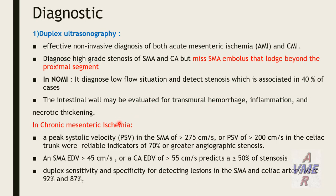For chronic mesenteric ischemia, peak systolic velocity in the superior mesenteric artery greater than 275 cm/s predicts 70% or more angiographic stenosis. A peak systolic velocity greater than 200 cm/s in the celiac trunk predicts 70% stenosis on angiography. End-diastolic velocity in the superior mesenteric artery greater than 45 cm/s or in the celiac trunk greater than 55 cm/s predicts more than 50% stenosis. Duplex has good sensitivity of 92% and 87% for detecting lesions in the superior mesenteric artery and celiac artery respectively.